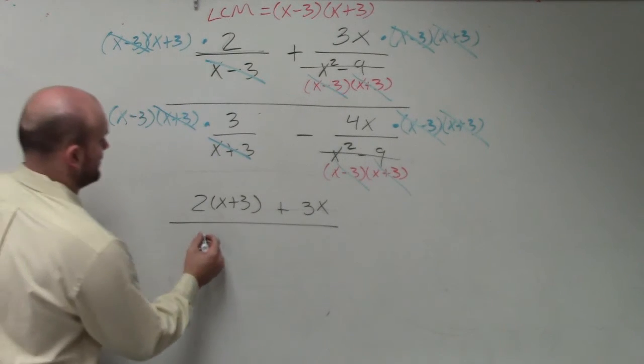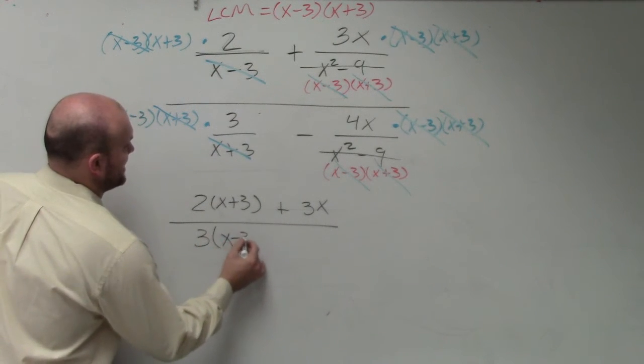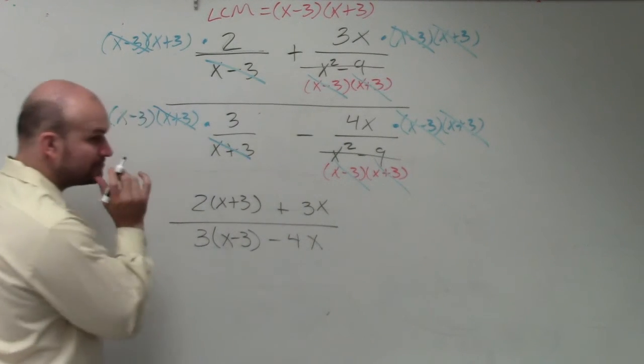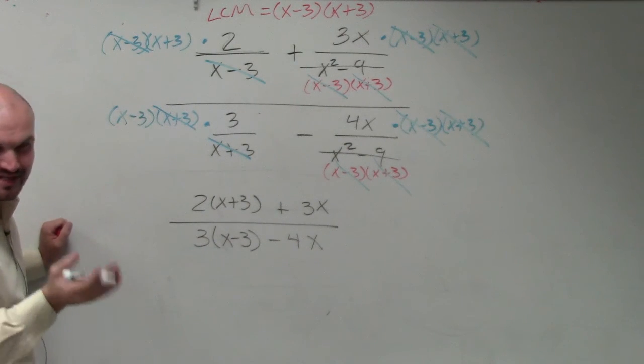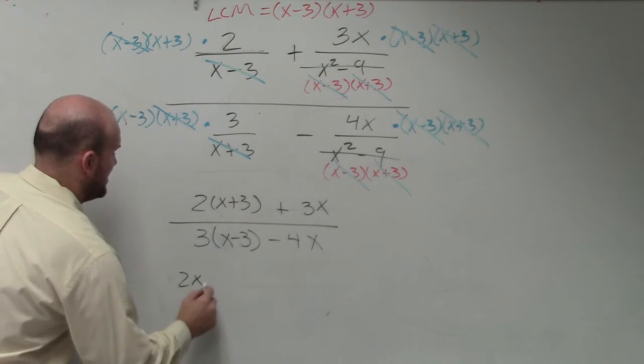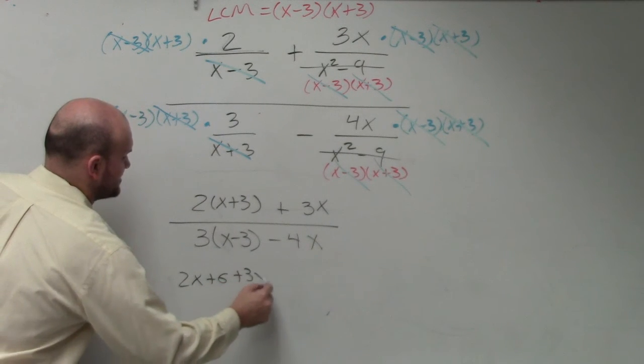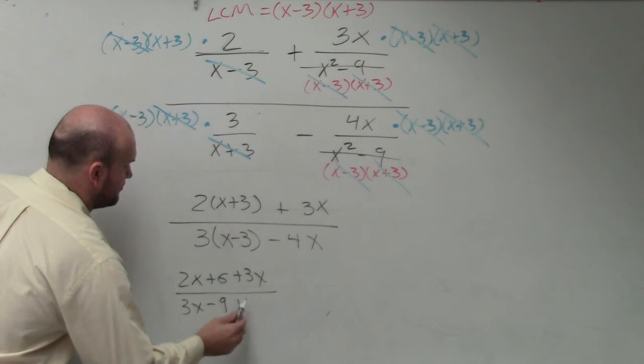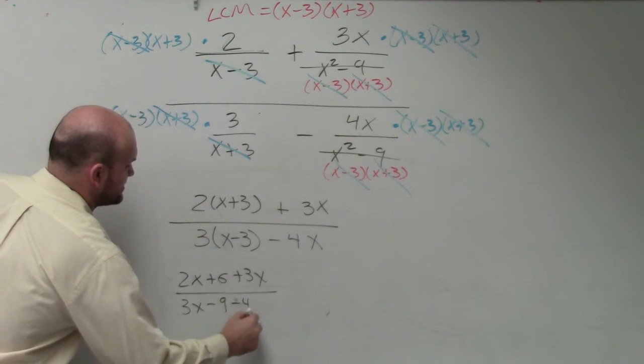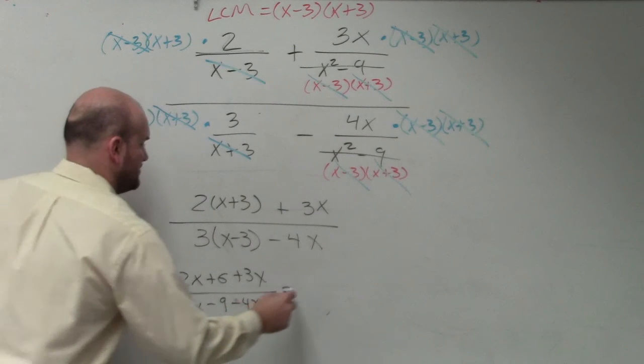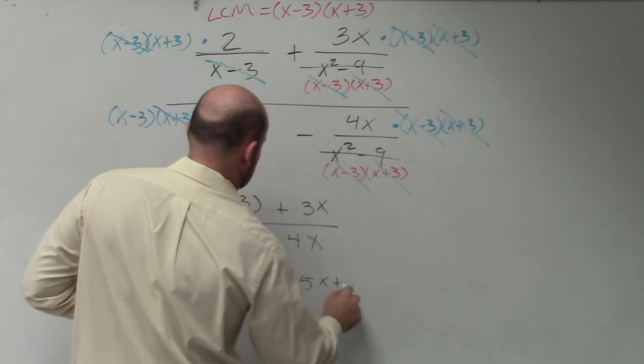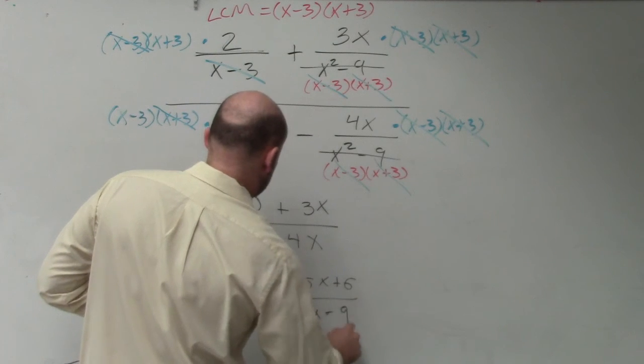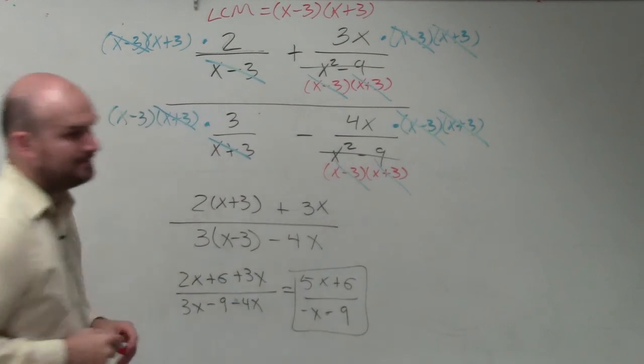Denominator, I have 3 times x minus 3 minus 4x. So we don't need to be lazy. We can do this: 2x plus 6 plus 3x, 3x minus 9 minus 4x, equals 5x plus 6 over negative x minus 9. And there you go.